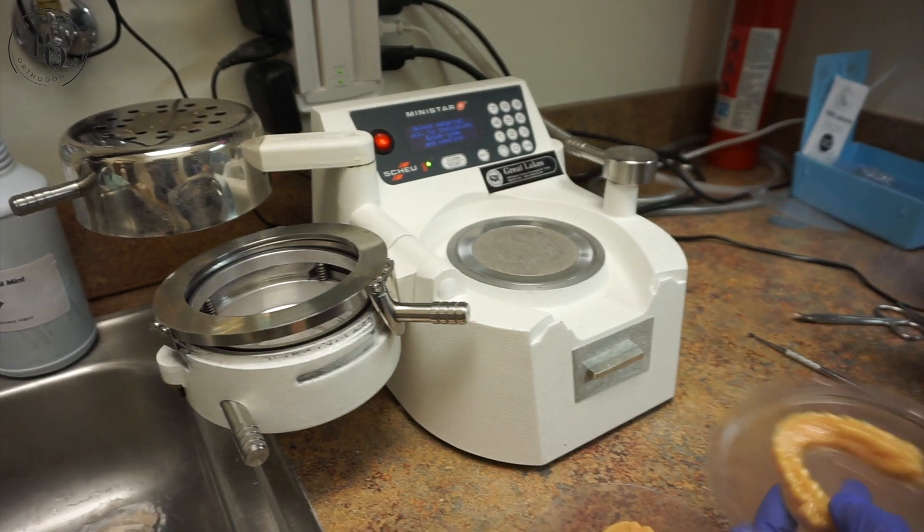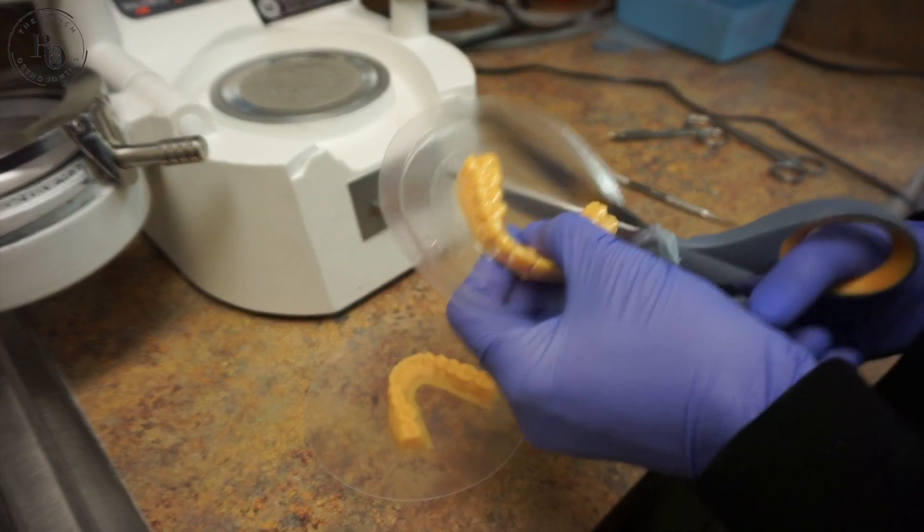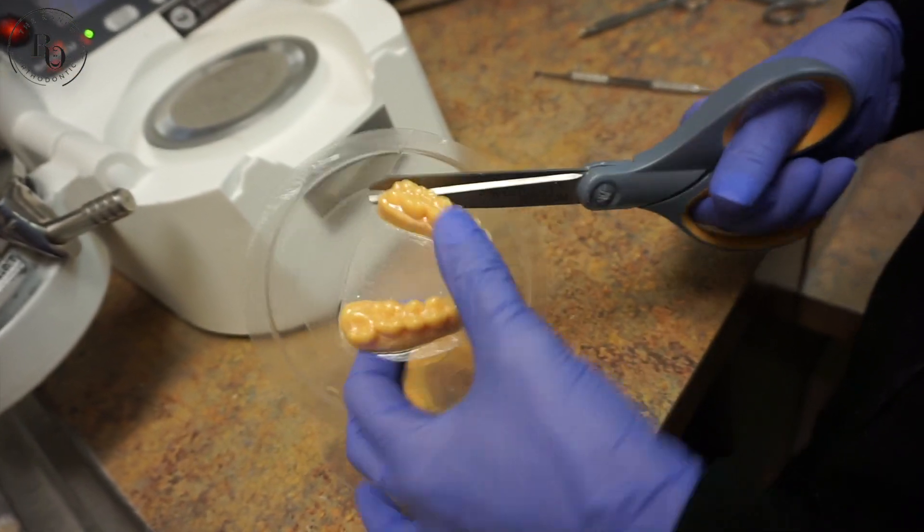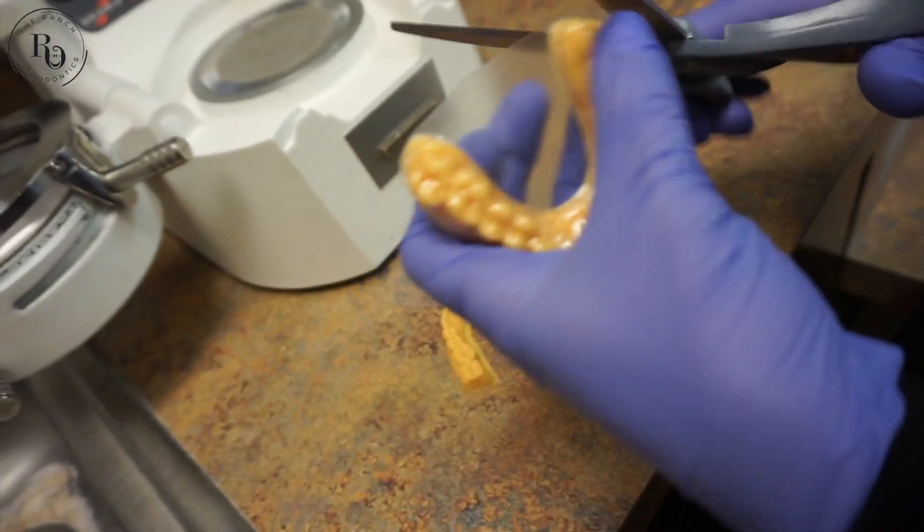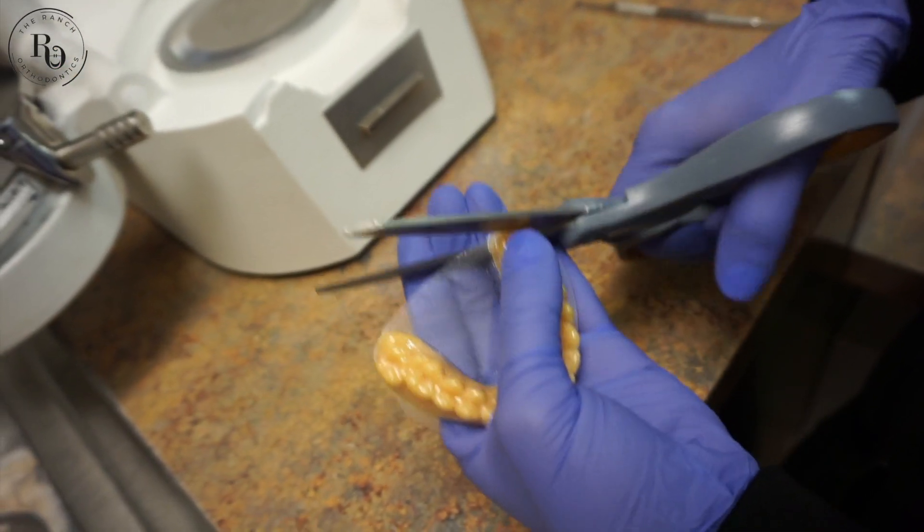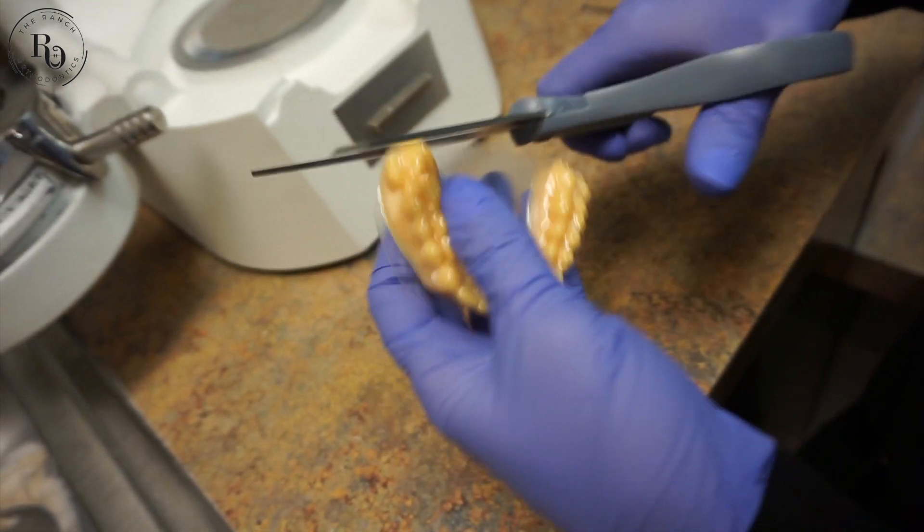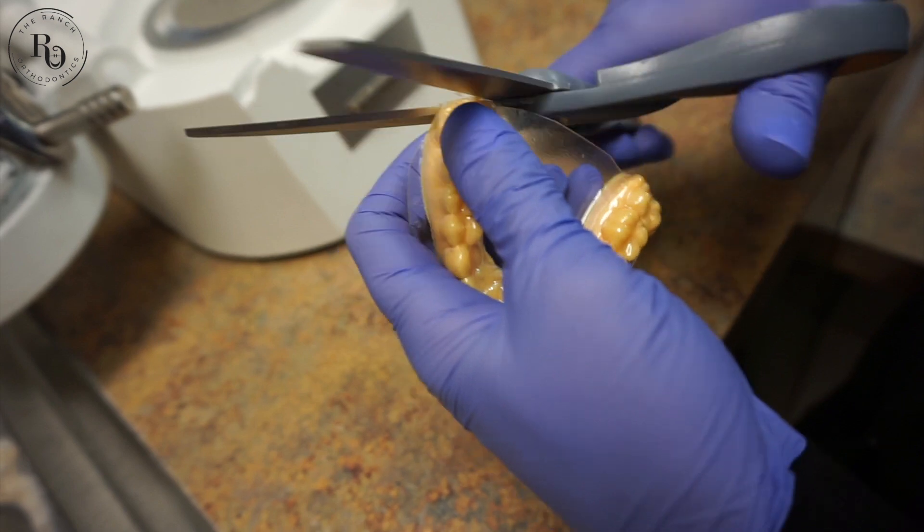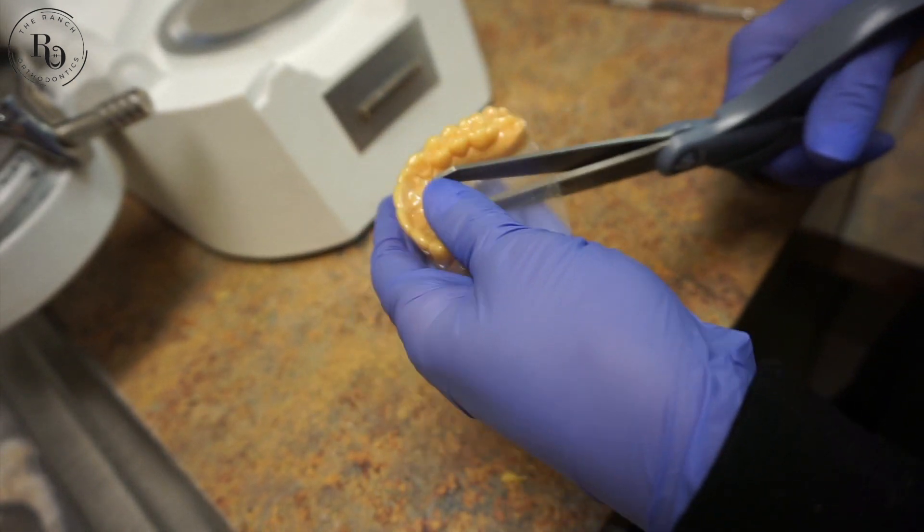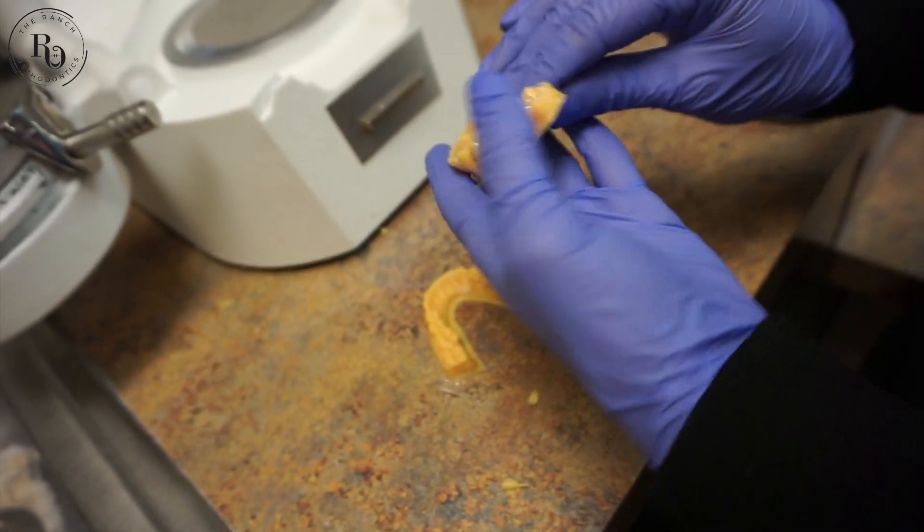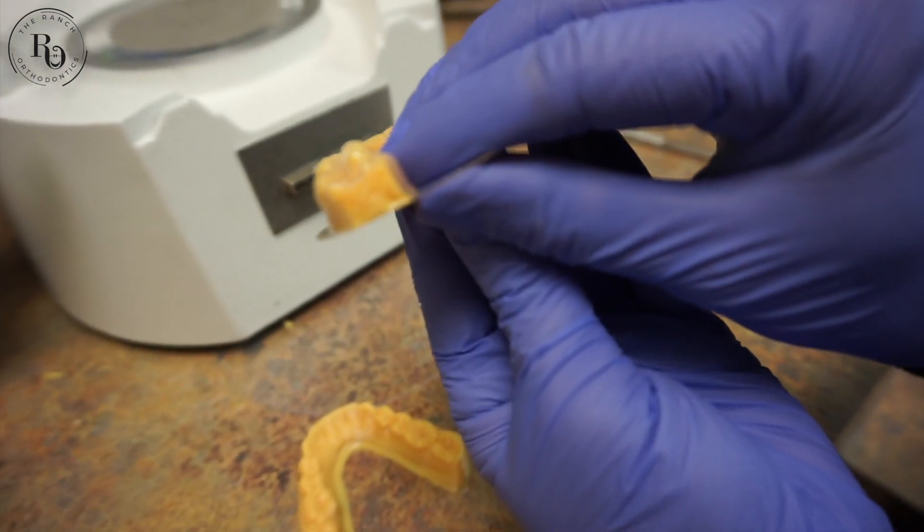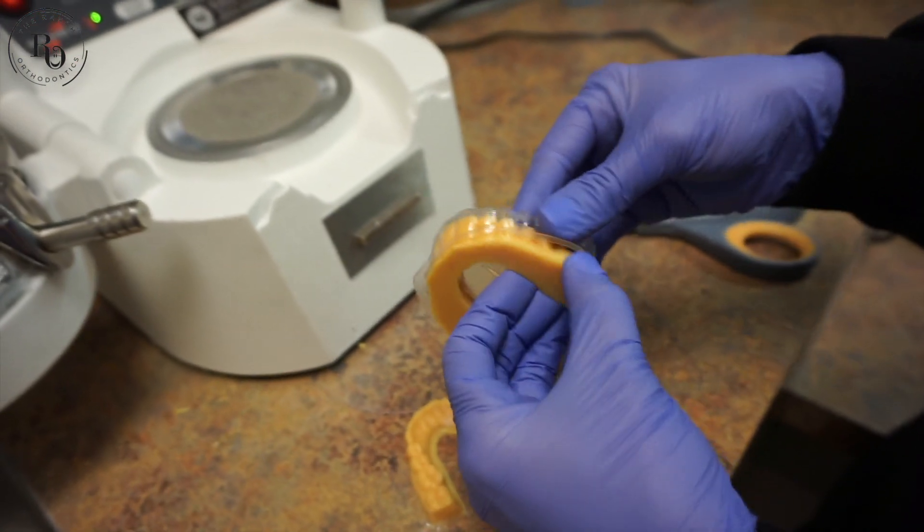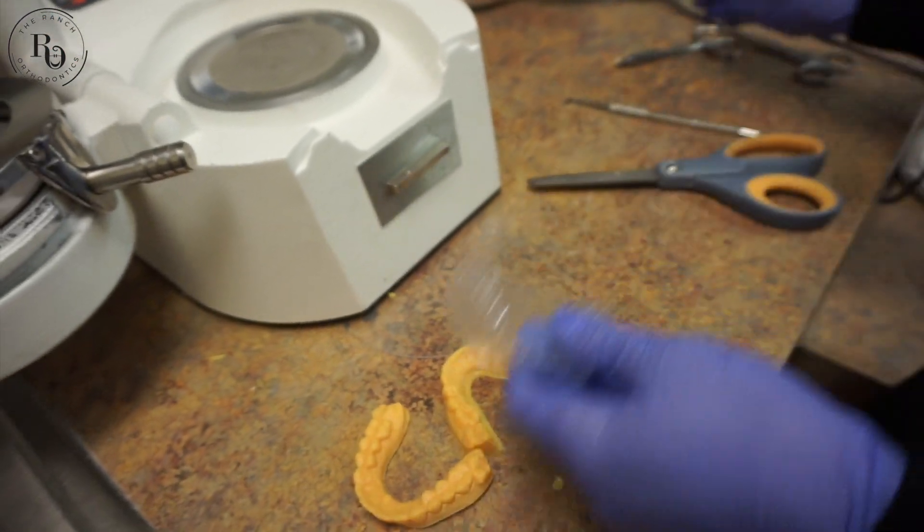Now we're just popping that out of there. We are going to trim it out of the plastic to get all the extra plastic off. And then we'll remove the model from the aligner and trim it down a little bit more.